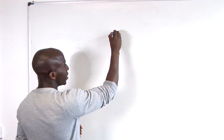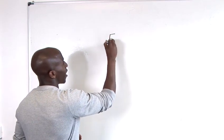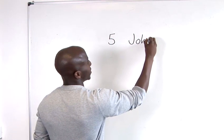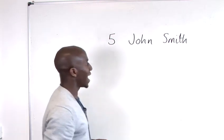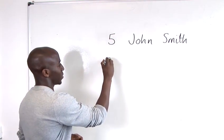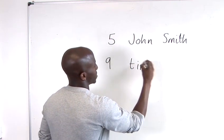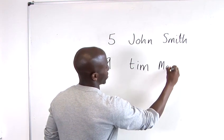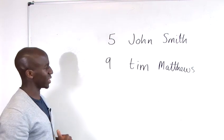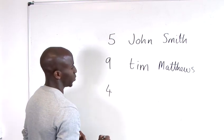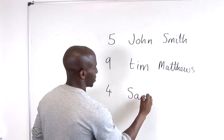So just imagine if in a particular school we found that we had five people with the name John Smith, and we also found that we had nine people with the name Tim Matthews, and then we found that we had four people with the name Sam Peters.